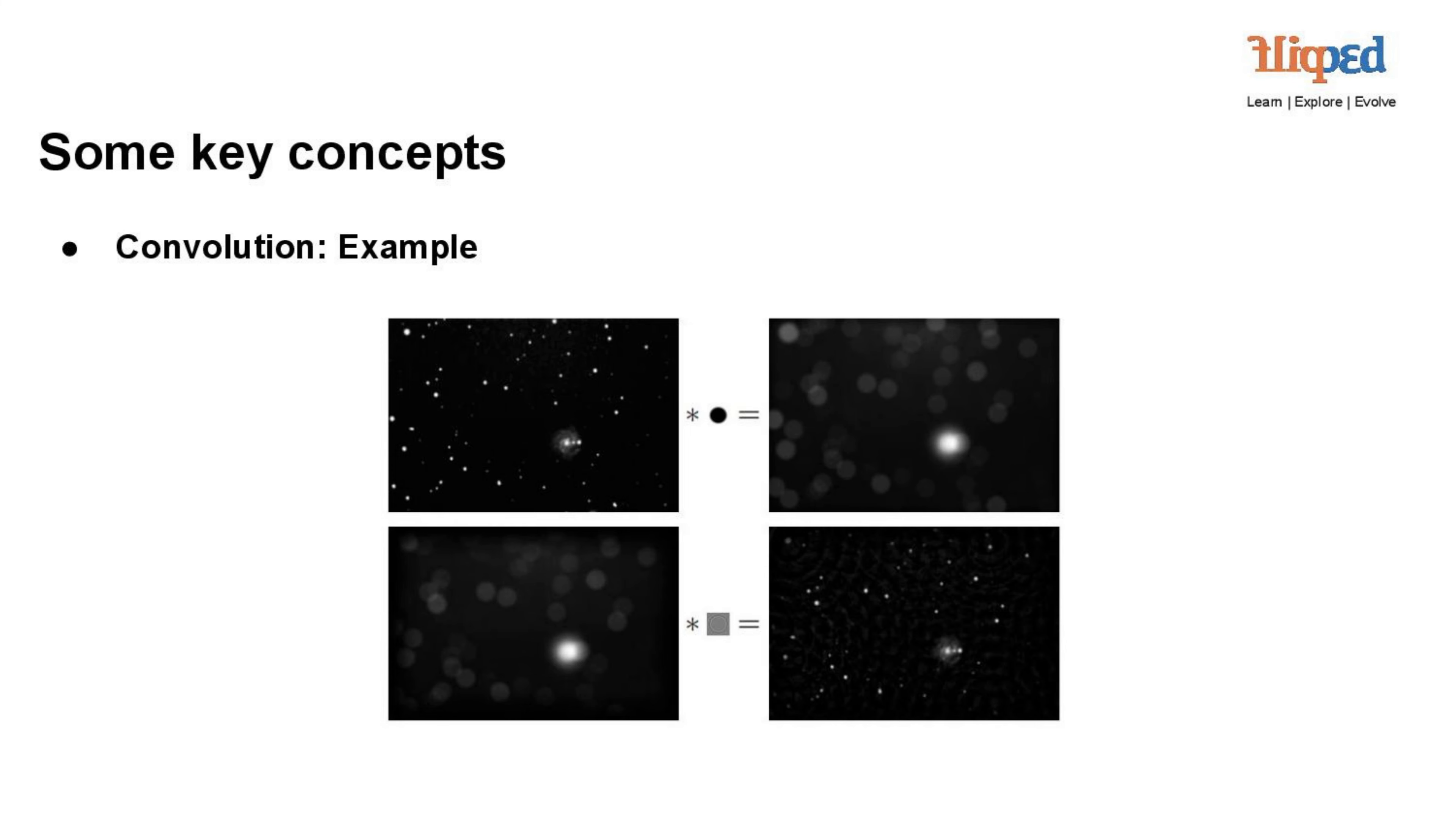Convolution with grayscale: In the second step, the blurry image is convolved with a grayscale kernel. This convolution operation helps to reverse the blurriness and restore some of the original clarity to the image. The grayscale kernel acts as a de-blurring filter, reducing the effect of blurriness caused by the previous convolution with the dark circle.